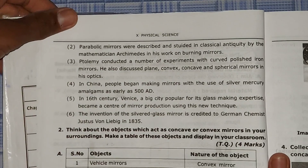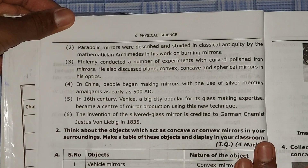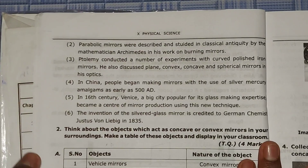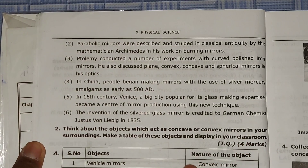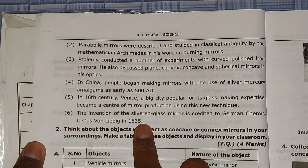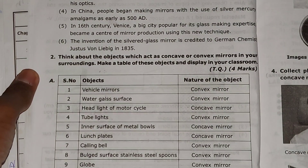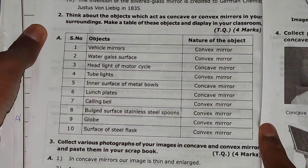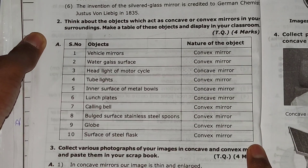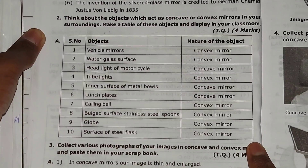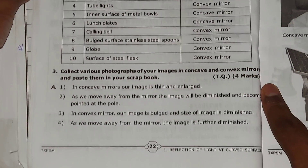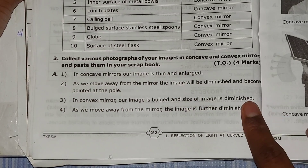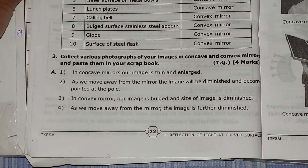If you want question answer photos, please check the first link in the description. You can see up to here we have the first question answer, and starting here is the second question. You can see the second question answer up to here. Now we'll move up to see the third question — you can see the third question and its answer ends here.